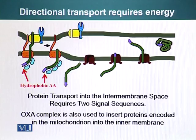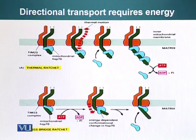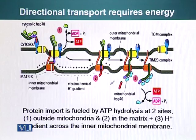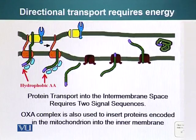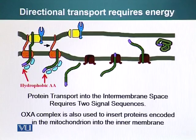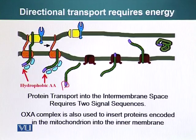What about proteins that have to go into the intermembrane space? These proteins actually have two signal sequences. The red domain is the signal sequence for import of the protein into mitochondria, while the purple portion is the signal sequence that directs the protein to the inner membrane space. As soon as the protein enters the matrix, the red signal sequence is cleaved off by signal peptidases. Proteins that have to go into the inner membrane space have a stretch of hydrophobic amino acids at their amino terminus, and this stretch is recognized by the OXA protein.